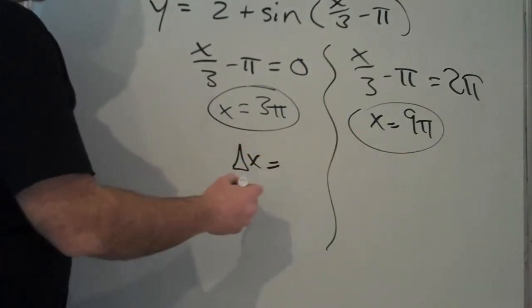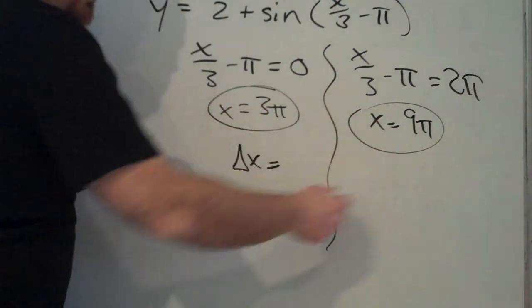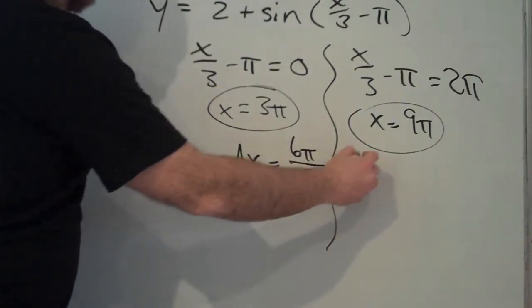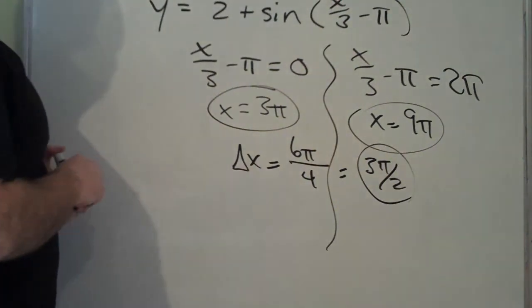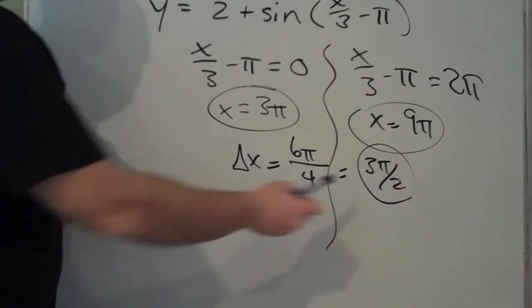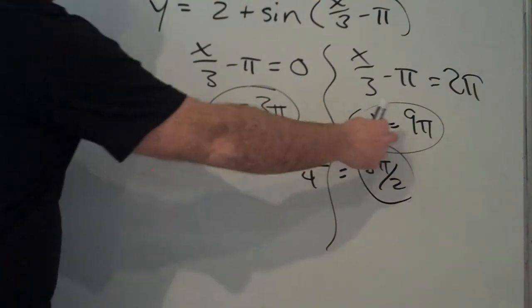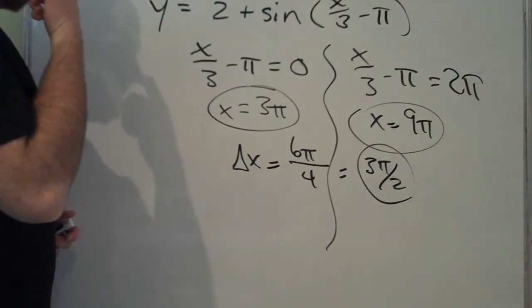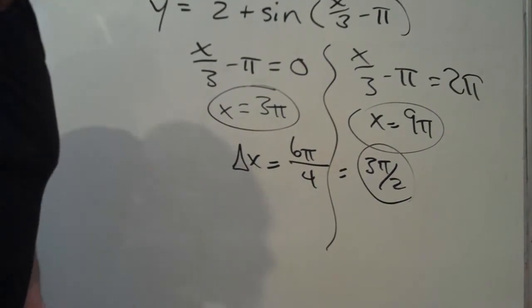The change in x is the period length. What's the period if it goes from three pi to nine pi? Nine pi minus three pi, which is six pi over four. So this is three pi over two. Now, we're probably going to have to get cute with the scale that we use for this. We know what we want our change in x to be. We know where the beginning and end of the period go.